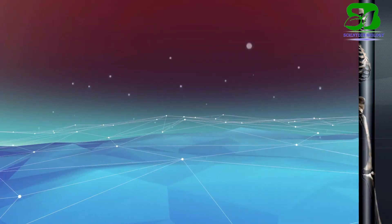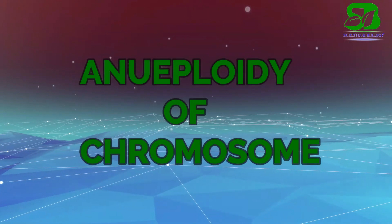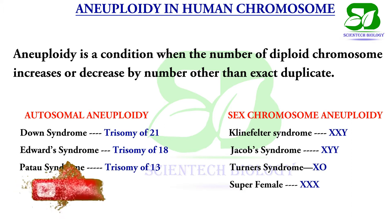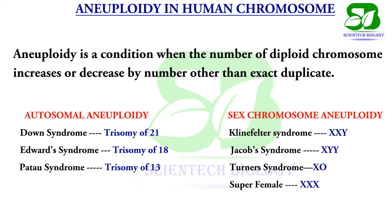This video mainly focuses on the aneuploidy condition of chromosomes. Aneuploidy is a condition when the number of diploid chromosomes increases or decreases by a number other than an exact duplicate. Aneuploidy may be seen in the sex chromosomes as well as the autosomal chromosomes.